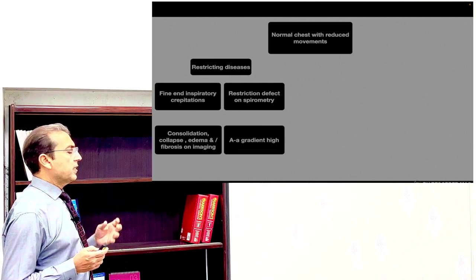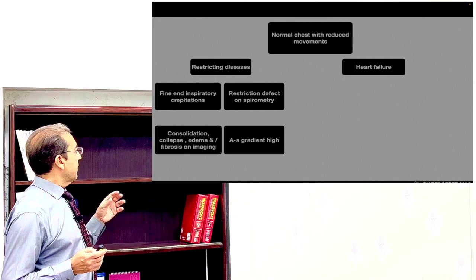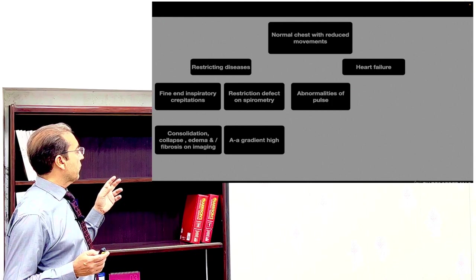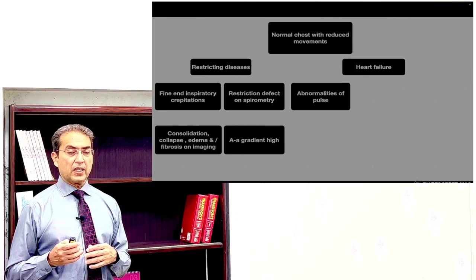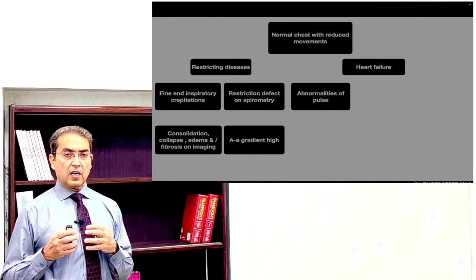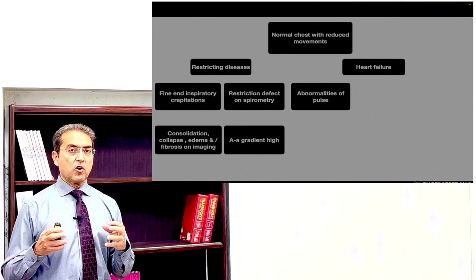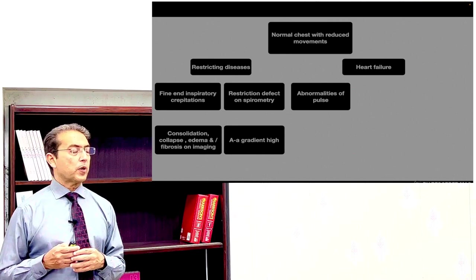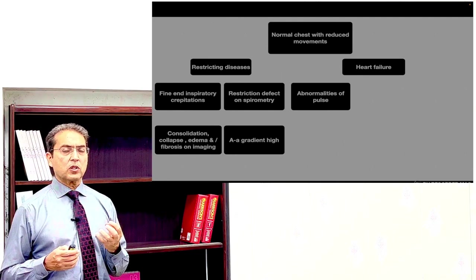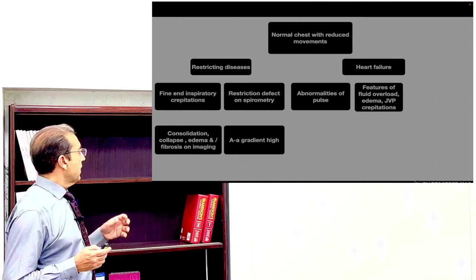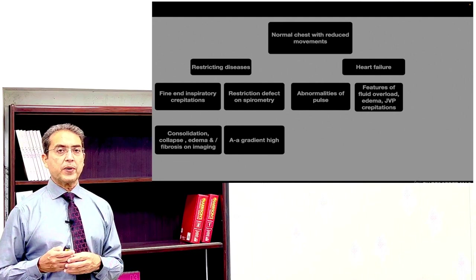The alveolar-arterial oxygen gradient is usually high in these patients. The second restrictive disease is heart failure, especially if the patient has pulmonary edema — there is a restrictive-type defect because of a problem with lung compliance. The lungs cannot expand due to pulmonary edema. There may be abnormalities of pulse such as tachycardia, alternating pulse, or rhythm abnormalities. The patient may have features of fluid overload: raised JVP, enlarged liver, or dependent edema.